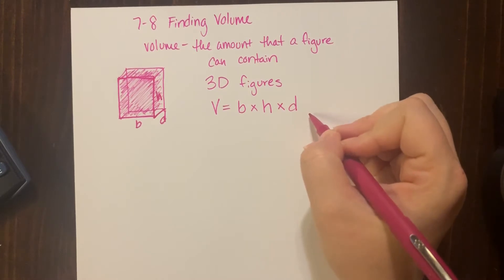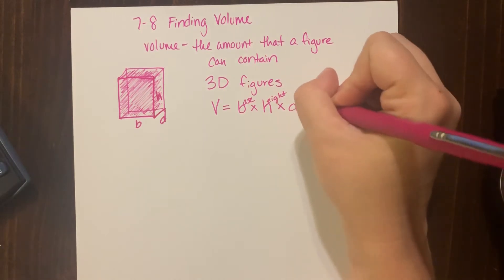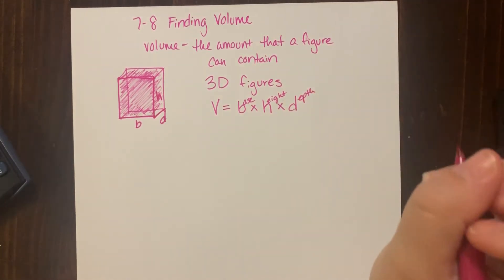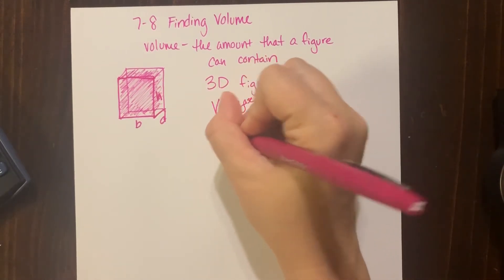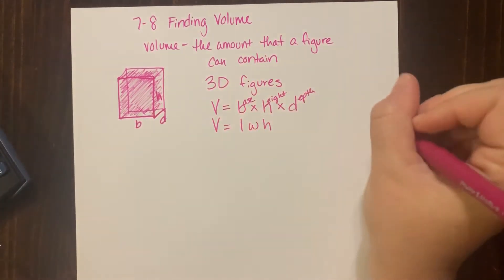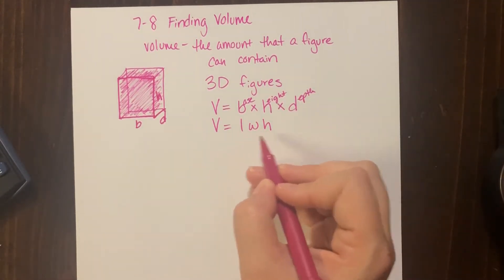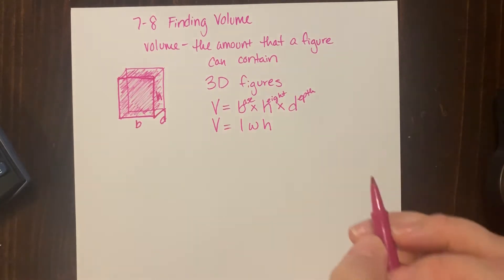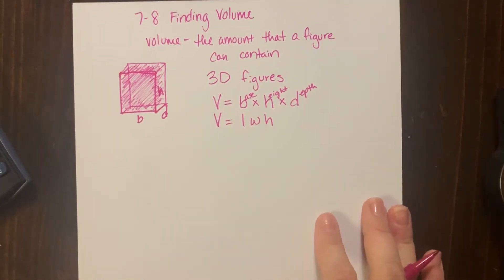This is just me writing out what it is: the base, the height, and the depth. You'll see volume written a bunch of different ways. It's usually length times width times height. Width is kind of the depth. That's kind of the normal way of seeing it written, but these are the same things. All right, so say for instance, let's see, let's say we have—I'm going to do another cereal box because they're easy to draw.